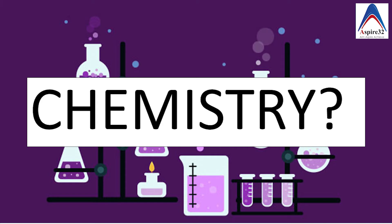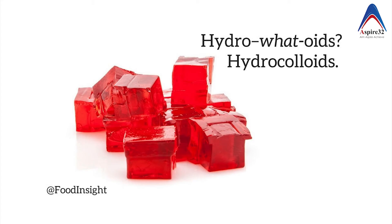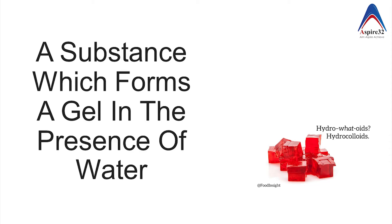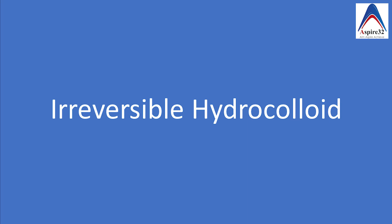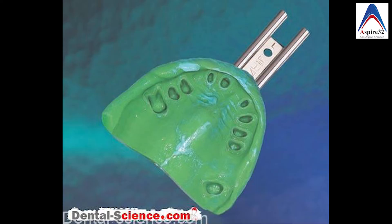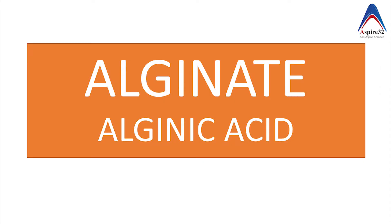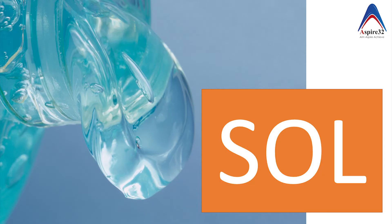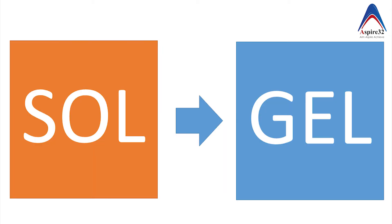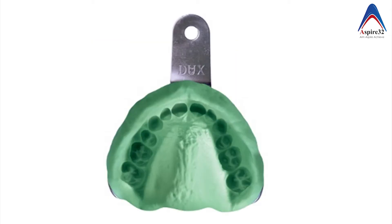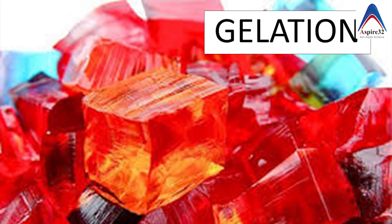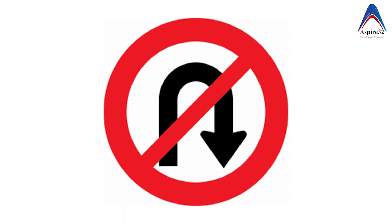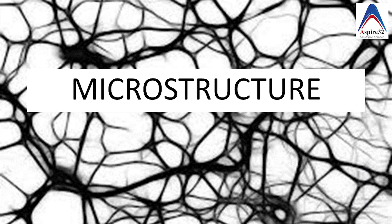Now let's learn about the chemistry of alginate. Alginate is a type of hydrocolloid, and in simple terms a hydrocolloid is a substance which forms a gel in the presence of water. But alginate is an irreversible hydrocolloid, whereas agar, which we will discuss in the next video, is a reversible hydrocolloid. Chemically, alginate is a polymer which when mixed with water gives you a salt, and that salt converts to gel. This process of converting a salt to gel gives us the impression and this step is called gelation. This gelation process in alginate is irreversible, in contrast to agar where it is reversible.